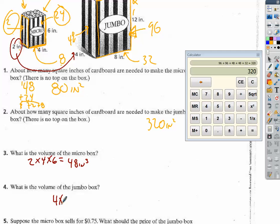So for the jumbo box, same idea. 4 times 8 times 12. And no one had problems with this. 32 times 12, because 4 times 8 is 32.